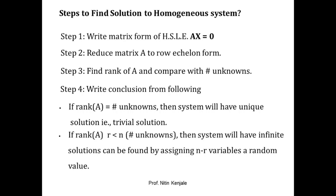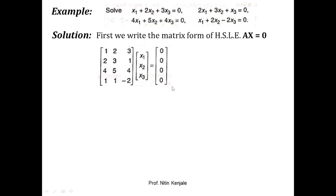Now let us see an example. We are given four equations, all homogeneous in nature with highest degree one, in three variables x1, x2, and x3. Following the first step, we write it in matrix form Ax = 0. This is matrix A, this is matrix x, and this is the zero matrix. We then perform a series of row transformations on matrix A to reduce it to row echelon form.